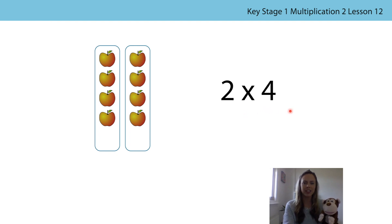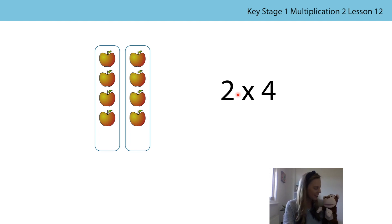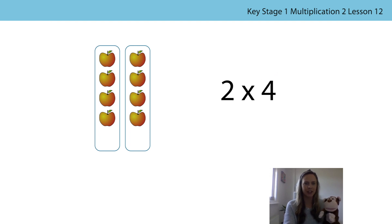What does each number in the multiplication expression represent? Can you tell someone at home? The two represents the number of groups. Bunga thinks that the four represents the number of apples in each group. Is he correct? He is — well done, Bunga.